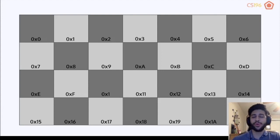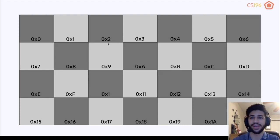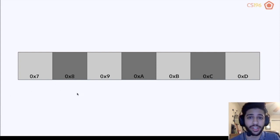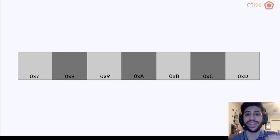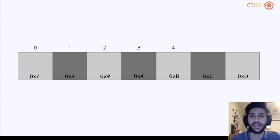Let's do a brief recap of ownership and references in Rust. Computers use memory represented as blocks addressed by hexadecimal numbers. Arrays are essentially just contiguous blocks of memory — the blocks are all touching each other. This contiguous property is what allows array indexing, because we know exactly where the next element will be: right next to the current one.